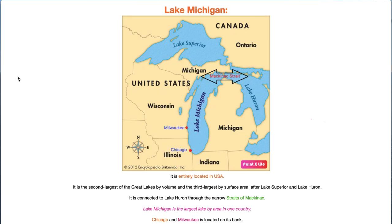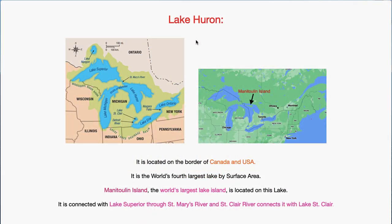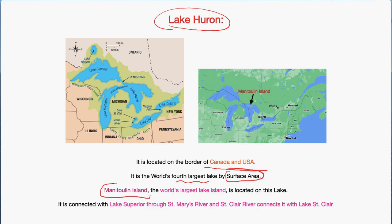The next lake is Lake Huron. Here you can see Lake Huron — this is also on the Canada and USA border, and it is 4th in surface area among the Five Great Lakes. An important island here is Manitoulin Island, which is a notable island in this lake. Lake Superior and Lake Huron are connected at two points: one is the St. Mary River, and the other connection involves the Soo Canal. There is also a small lake called Lake St. Clair and the St. Clair River in this region.